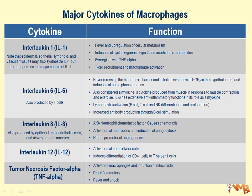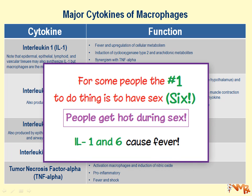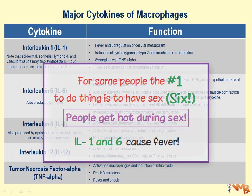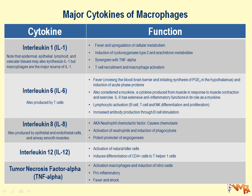Interleukin-6 also produces fever and in this respect is similar to interleukin-1 in function. The reason interleukin-1 and interleukin-6 produce fever is that they have the ability to cross the blood-brain barrier and initiate synthesis of prostaglandin-E2 in the hypothalamus. The immediate cause of resetting the thermostat for temperature in the body is prostaglandin-E2, which is ultimately due to interleukin-1 and interleukin-6 function.